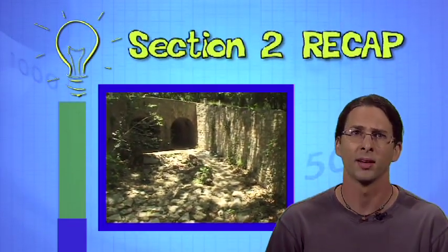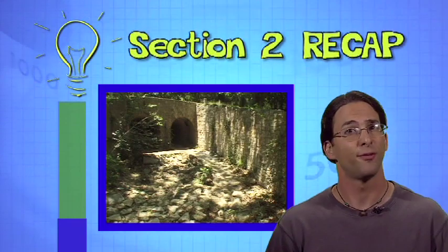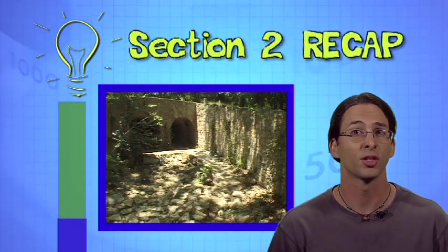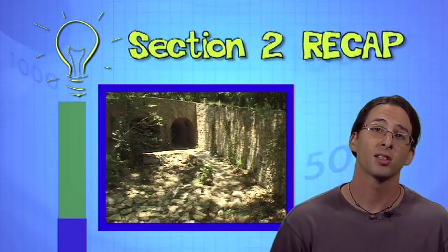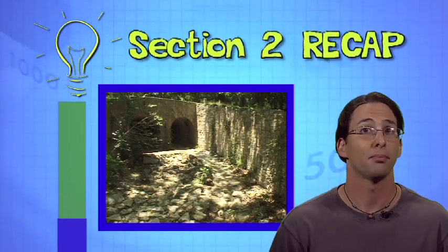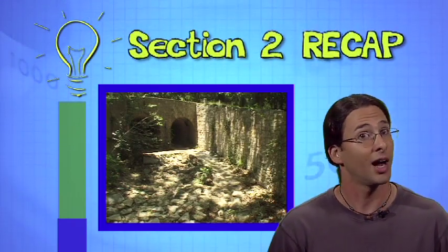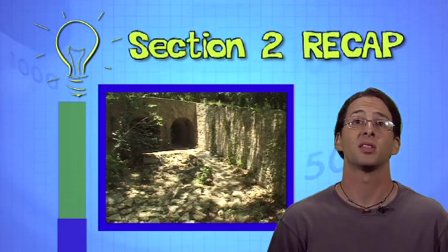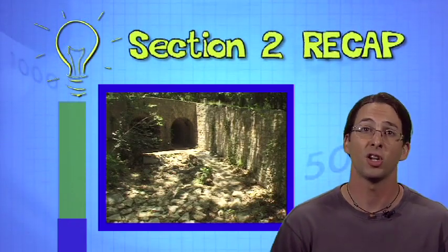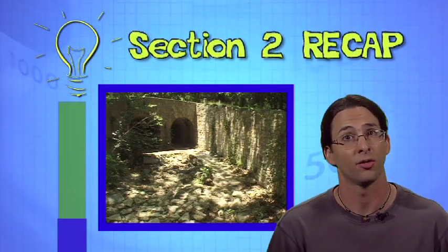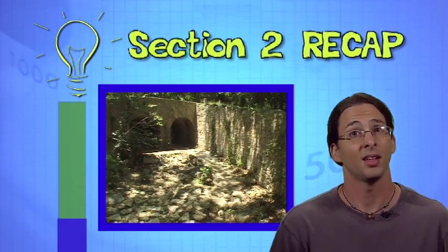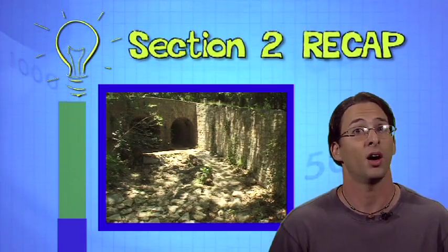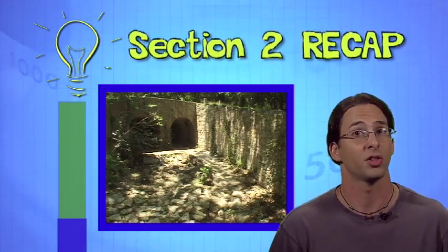In severe water table drops, springs stop flowing. This makes the very unique communities of fish, frogs, salamanders, and plants that rely on the spring water suffer because they don't receive enough water to live. And it means that there is less fresh water in the aquifer for us to drink.